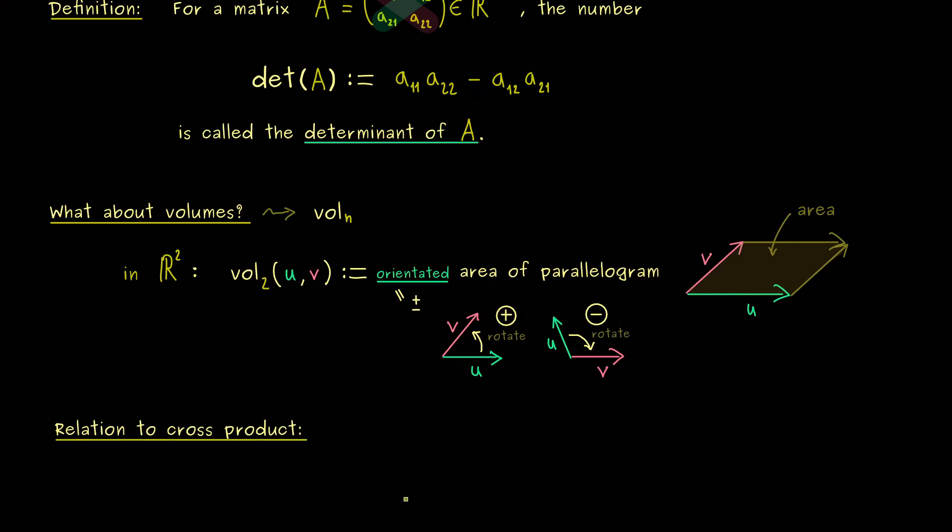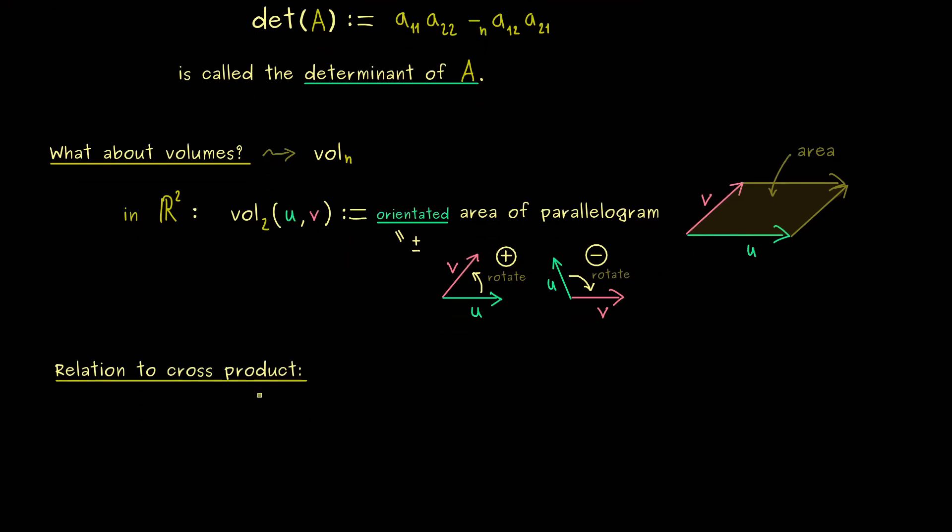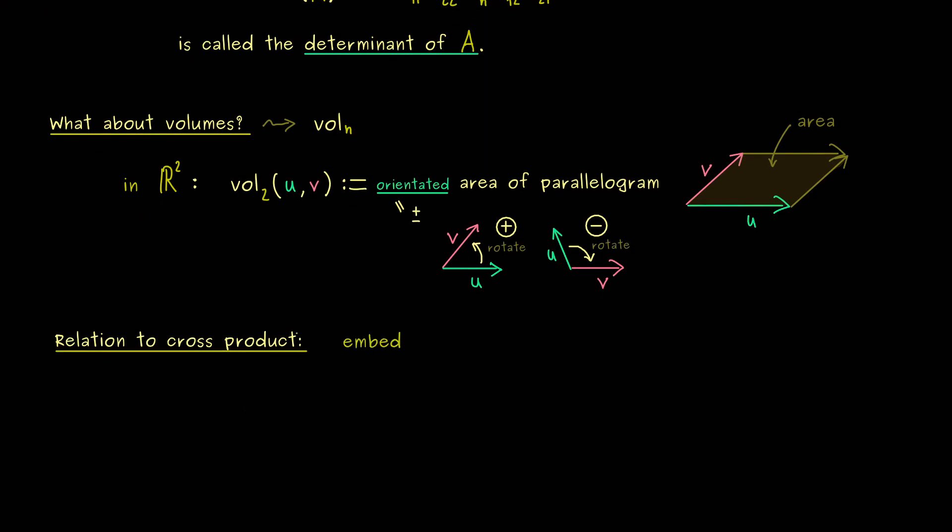The only problem we have is that the cross product is only defined in R3. However, this is not a big problem because we can simply embed R2 into R3. For example, you could see R2 as the xy-plane in R3.